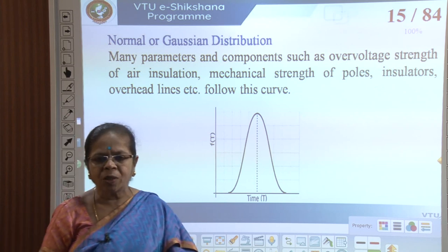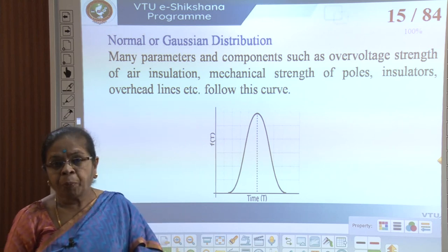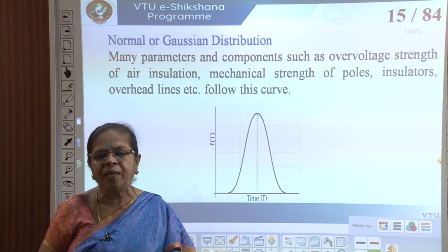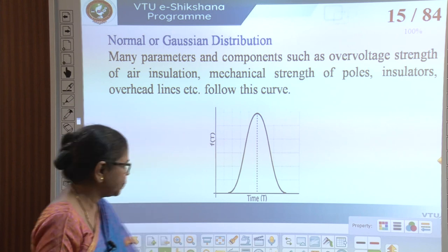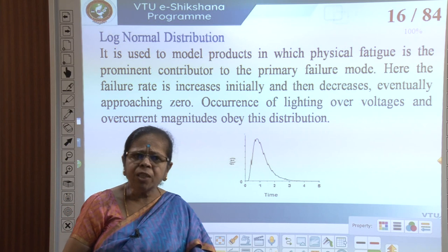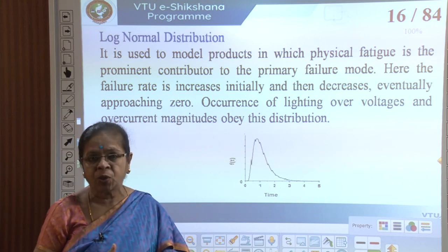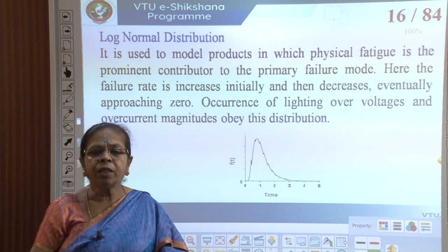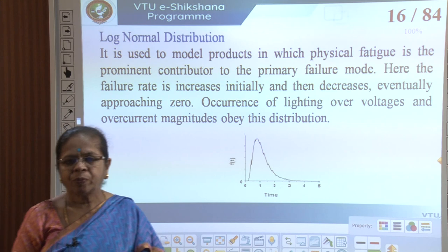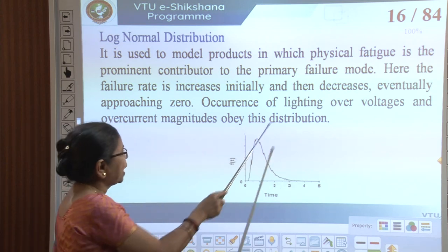The normal or Gaussian distribution is used for many distribution sector components where properties like insulation strength, dielectric strength, and mechanical strength — such as overhead lines and insulators — follow this pattern. The log-normal distribution is used when physical fatigue (mechanical stress due to vibrations, strain, or tension) is the main contributor to failure; here the failure rate initially increases then decreases, eventually approaching zero. Overvoltages due to lightning and overcurrent magnitudes obey this distribution.